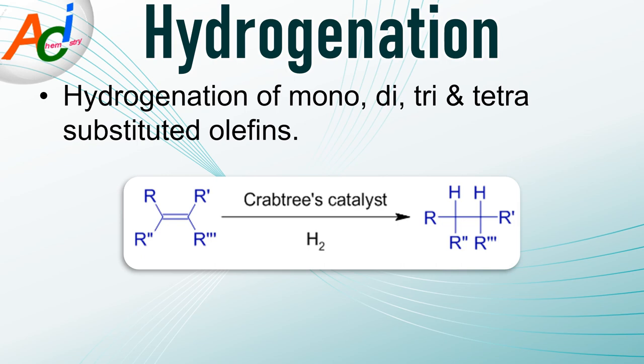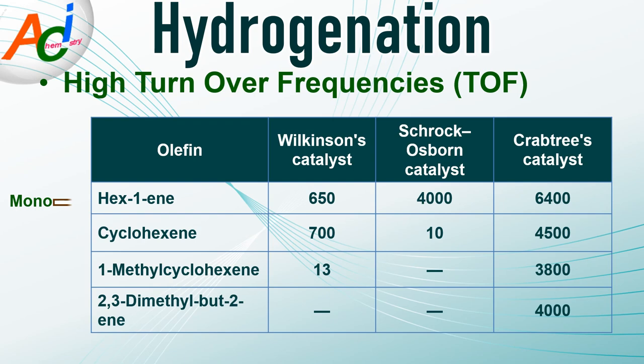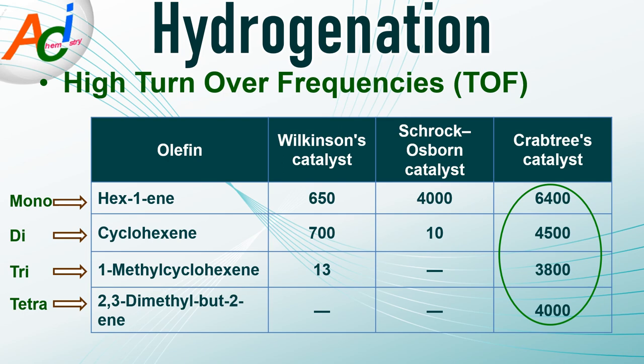The Crabtree's catalyst is an effective hydrogenation catalyst. It effectively catalyzes the hydrogenation of double bonds in mono-, di-, tri-, and tetrasubstituted olefins with very high turnover frequencies. The solvent of choice is dichloromethane. Its efficiency is evident from the table as shown on the screen. When compared with other hydrogenation catalysts like Wilkinson's catalyst and Schrock-Osborne catalyst, the Crabtree's catalyst shows higher turnover frequencies even with tri- and tetrasubstituted olefins. Note that hydrogenation is seldom possible with Wilkinson's and Schrock-Osborne catalysts.